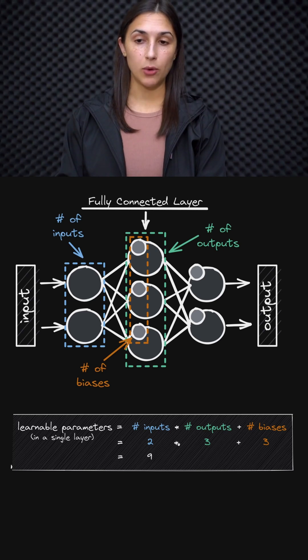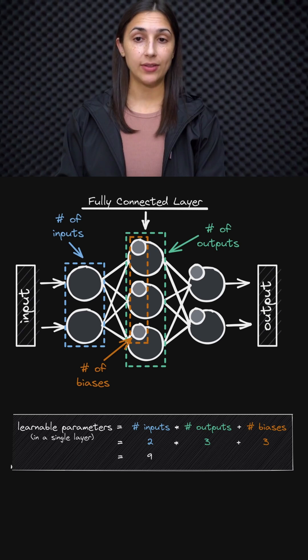We have two here, then we multiply that by the number of outputs. We have three output nodes in this layer, so we have two times three. This number of inputs times the number of outputs gives us the total amount of weights connecting our given layer to the previous one. That gives us six total weights, which we can see illustrated here—six weights connecting our current layer to the previous layer.